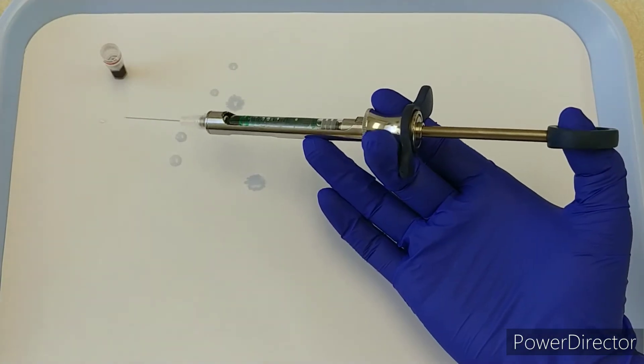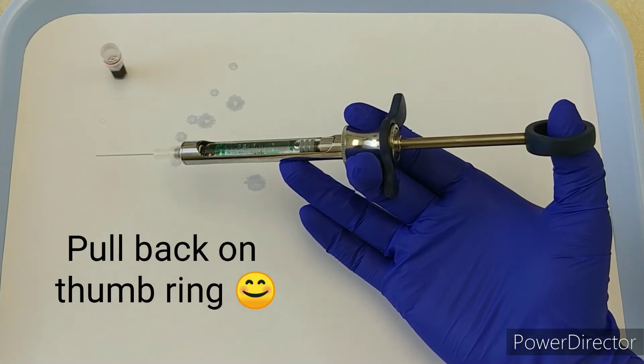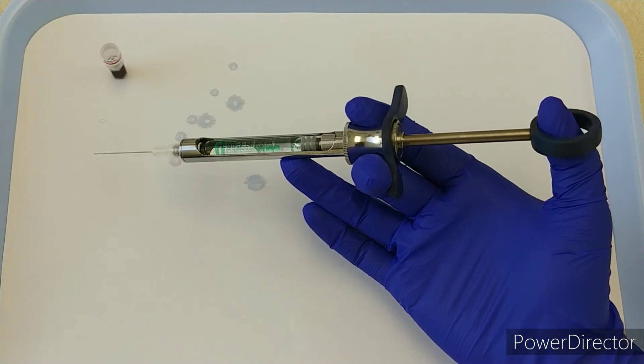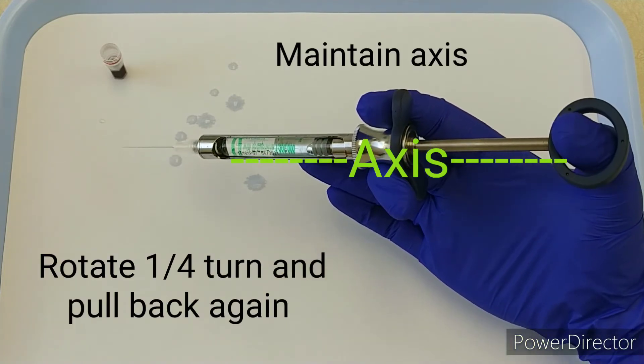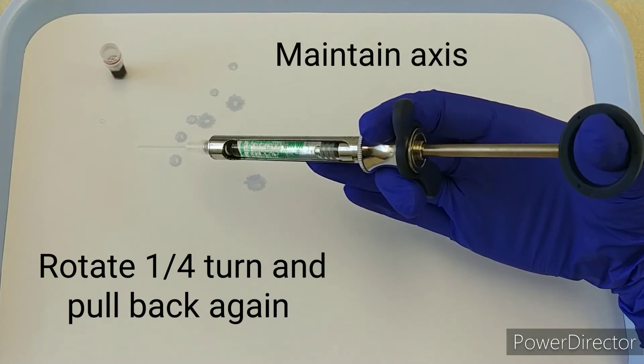My aspirations are going to look a little like this: I'm going to pull back on the thumb ring—I got a little visual of some bubbles there—then I'm going to rotate a quarter turn, another aspiration, more bubbles, and I could see both of those.